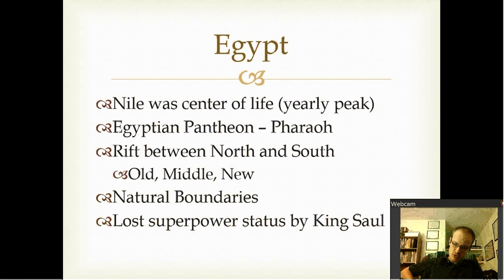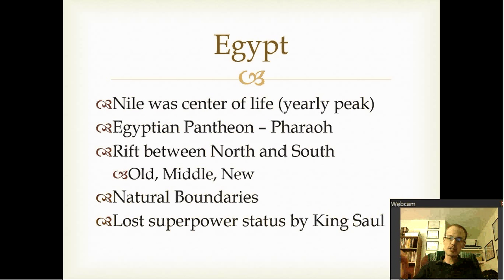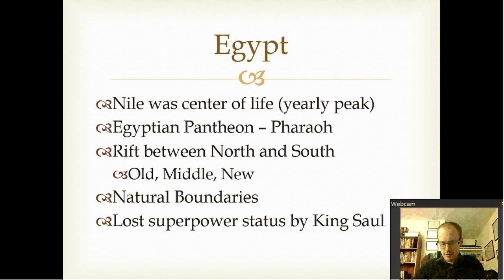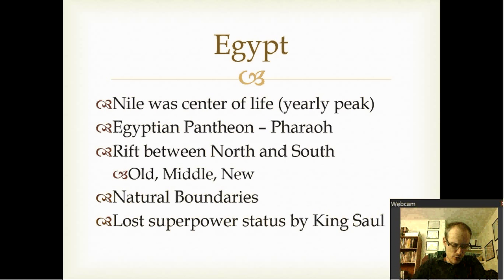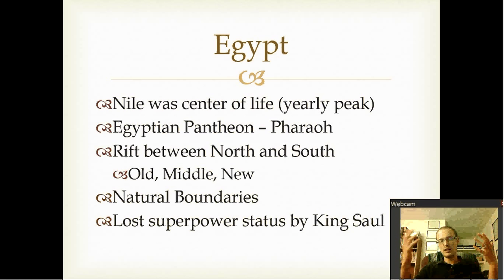The Nile had a yearly peak which would give them their overflow for their produce. If the Nile had a bad year where they didn't get enough water, it was often associated with either the pharaoh doing something wrong or the people doing something wrong. So the Egyptian had the idea of the pantheon, a lot different than the patron deities, though obviously there are overlaps.